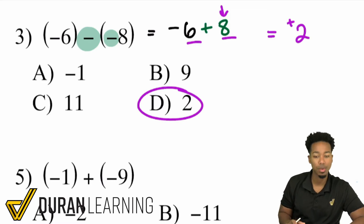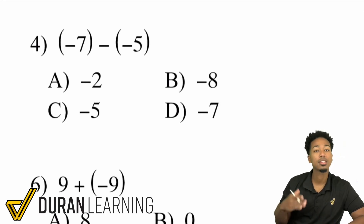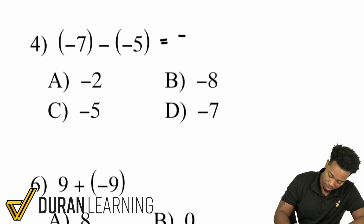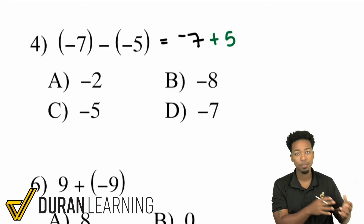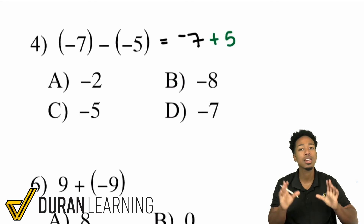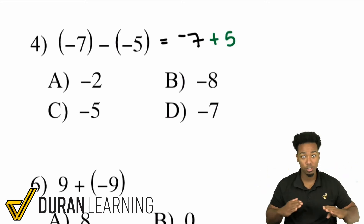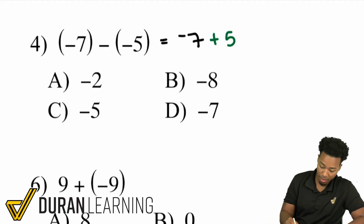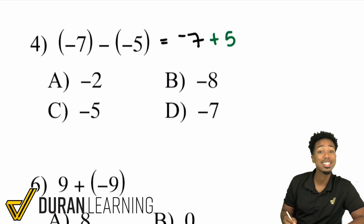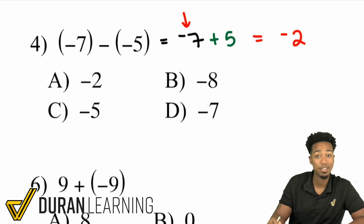Number 4: negative 7 minus negative 5. Remember, a double negative is a positive, so this turns into negative 7 plus 5. You have a negative number plus a positive number — opposite signs — so take the difference. The negative 7 is going toward the left, the positive 5 toward the right, so there's cancellation. The difference of 7 and 5 is 2, and since 7 is the bigger number and it's negative, the answer is negative 2.